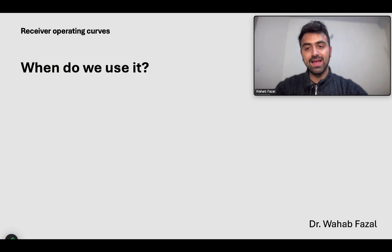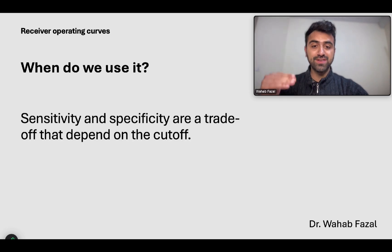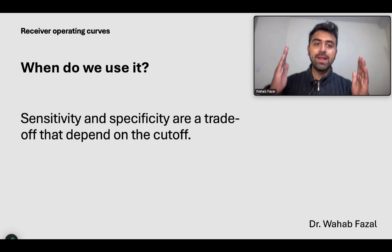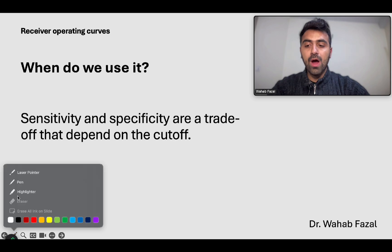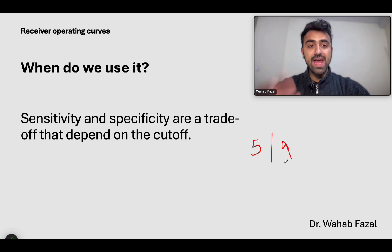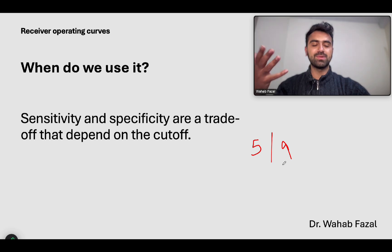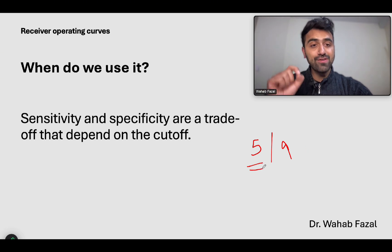The first question is why should we know about it, and when do we actually use it? If you've watched my previous video in this series, you know that sensitivity and specificity are a trade-off, and this trade-off depends upon the cut-off on which you diagnose someone with the disease. For example, for diagnosing depression, you usually need five out of the nine symptoms. Who told us this cut-off? Who said it's going to be five symptoms and not six or four? This is where receiver operating curves come in.